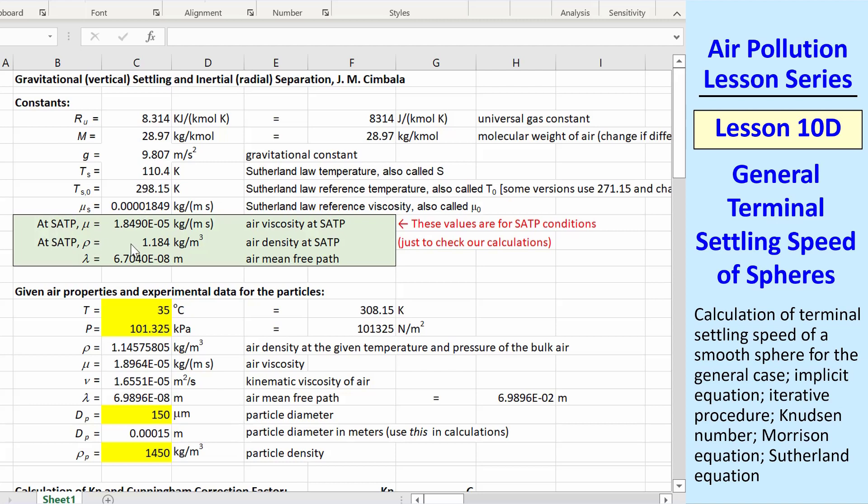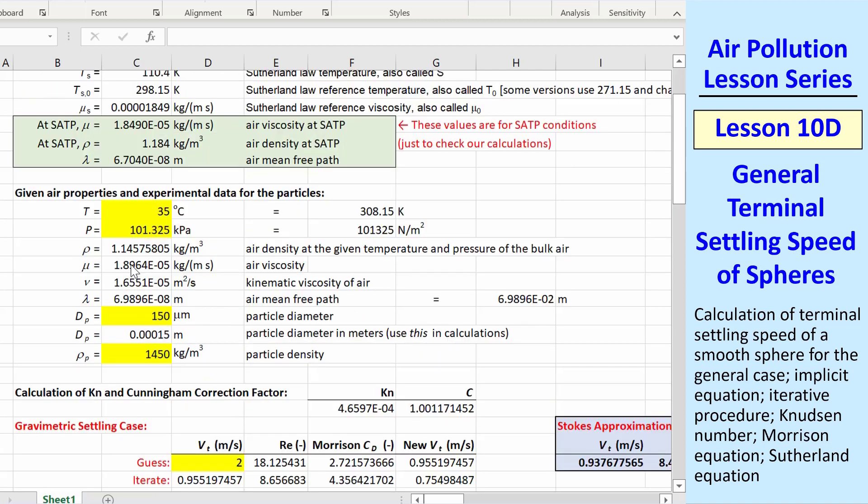Here's g and the constants for the Sutherland law. These are just values at SATP for comparison. I calculate μ from Sutherland, and ν is simply μ over ρ. I calculate λ from the equation I showed.